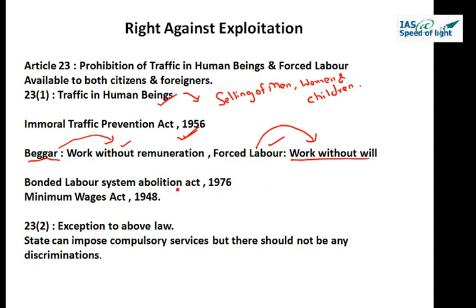To implement Article 23, Parliament passed the Bonded Labour System Abolition Act, 1976, and the Minimum Wages Act, 1948, along with many other legislations. Part 2 of Article 23 says nothing in this article shall prevent the state from imposing compulsory service for public purposes, but in imposing such service the state shall not make any discrimination on grounds only of religion, race, caste, or class. So the state can impose compulsory services like military service but without any discrimination.